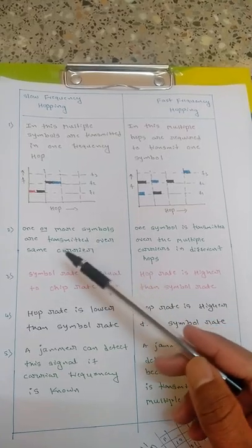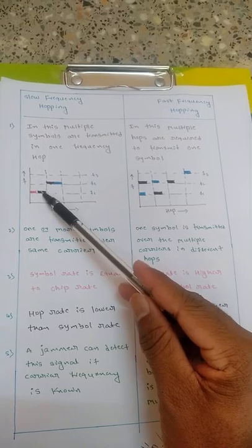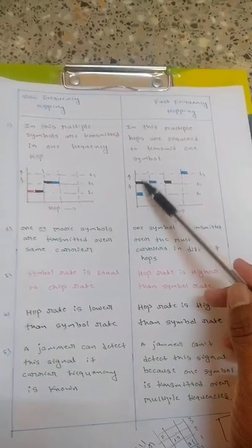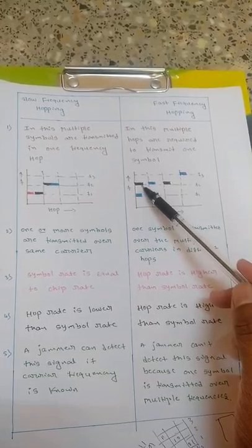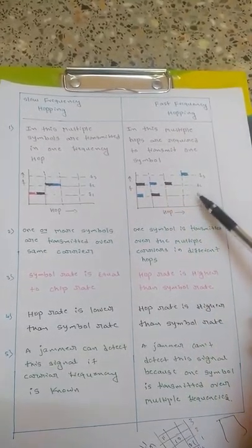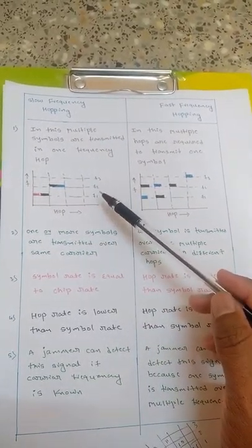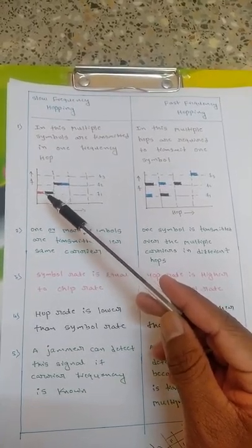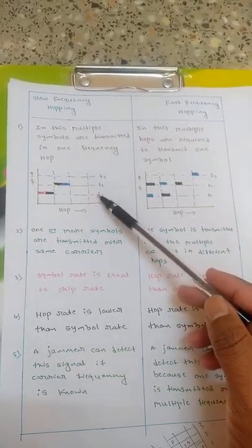In slow frequency hopping, one or more symbols are transmitted over the same carrier — for example, two symbols transmitted in the same carrier F1. In fast frequency hopping, one symbol is transmitted over multiple carriers: for example, one symbol is transmitted over F2 and F1. So in slow frequency hopping, the symbol rate is equal to the chip rate, as one data is completely transmitted in one frequency.